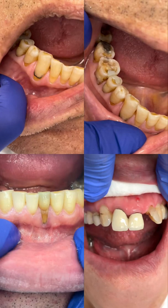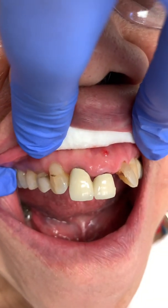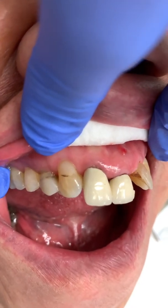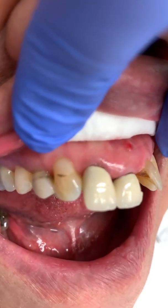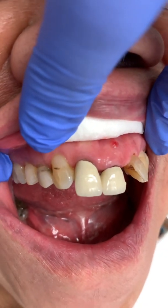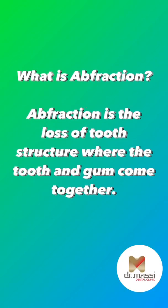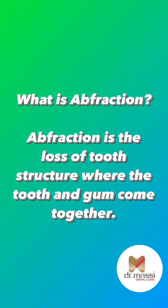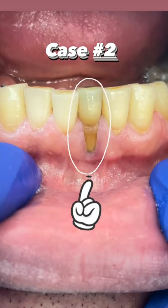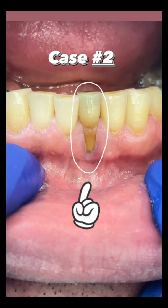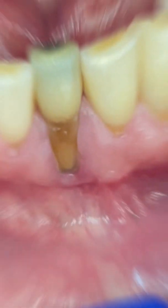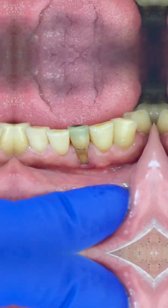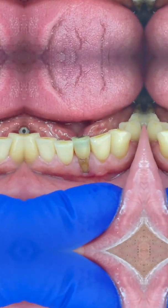Dental abfraction. Look closely at her gums. Abfraction is the loss of tooth structure where the tooth and gum come together. Look at the pointing area — you can see how severe the gum recession is. The damage is usually wedge-shaped or V-shaped and is unrelated to cavities, bacteria, or infection.